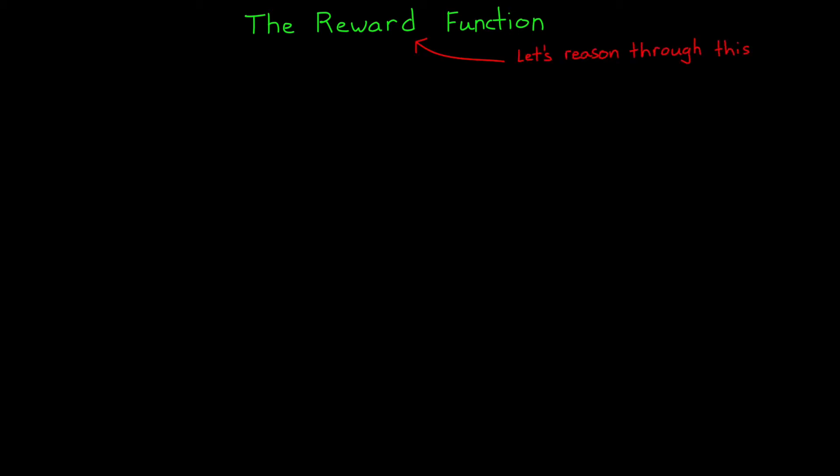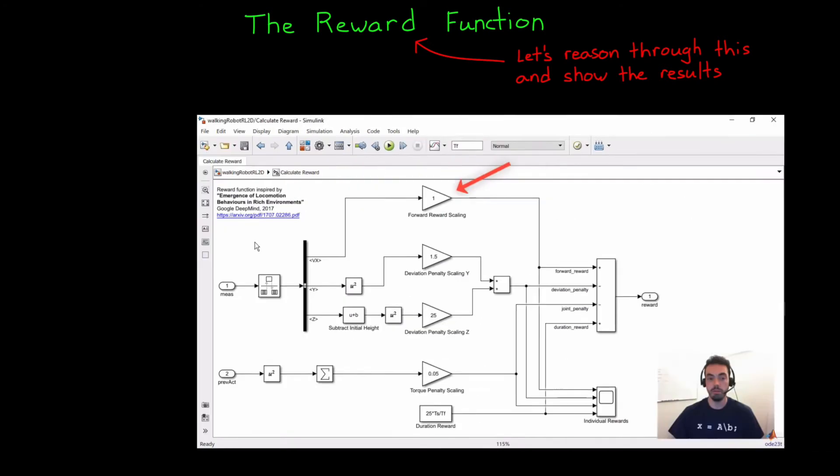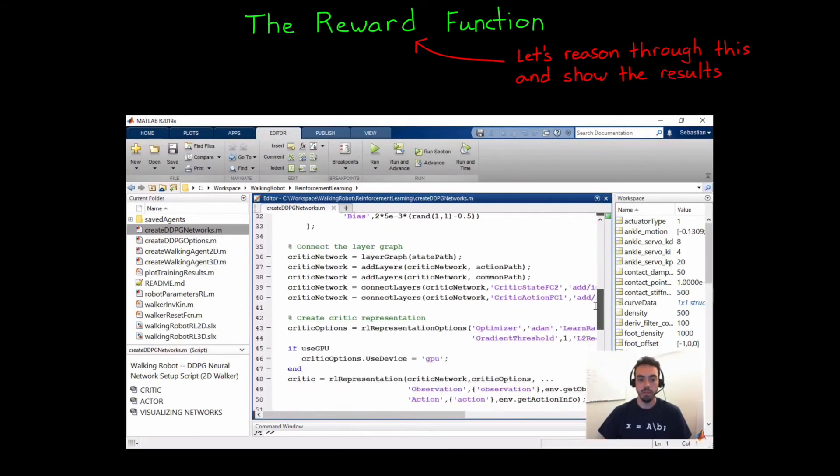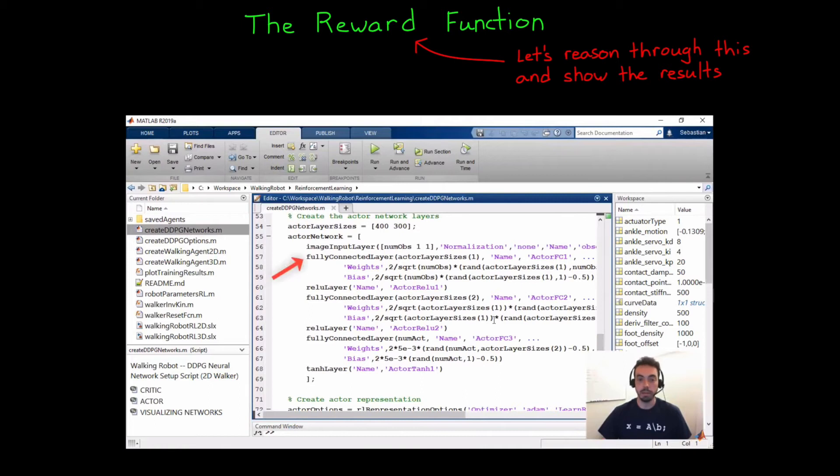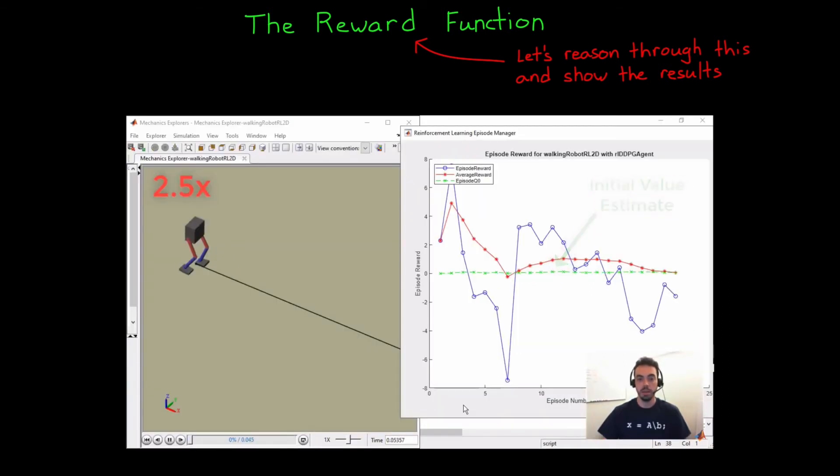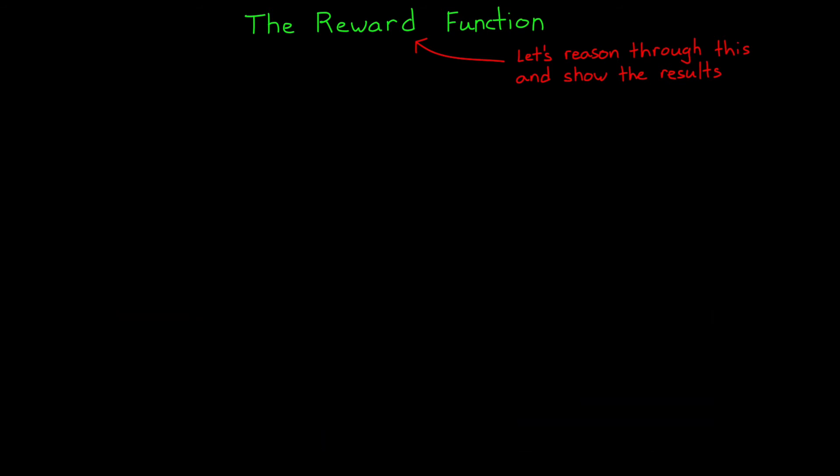And I want to reason through what should exist in the reward function by thinking about the conditions that are important for a walking robot. This might be how you'd approach building up a reward function if you didn't know where to start. Now I'm going to show you the results of training with this function as we create it so you can see how the changes impact the solution. However I'm not going to go over how to run the model because there's already a great video by Sebastian Castro that does just that. So if you're interested in trying out all of this on your own I recommend checking out the link in the description below. Alright so on to the reward.